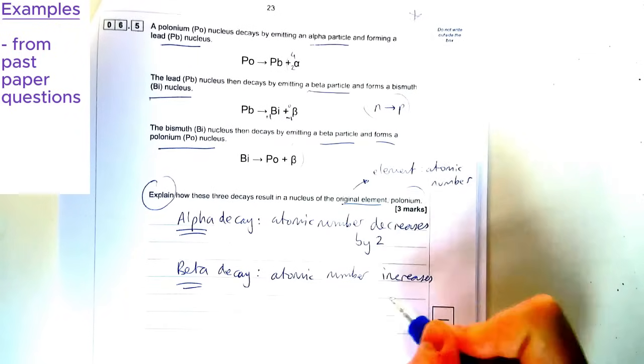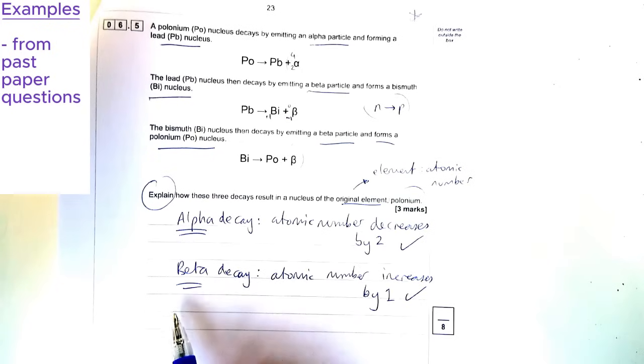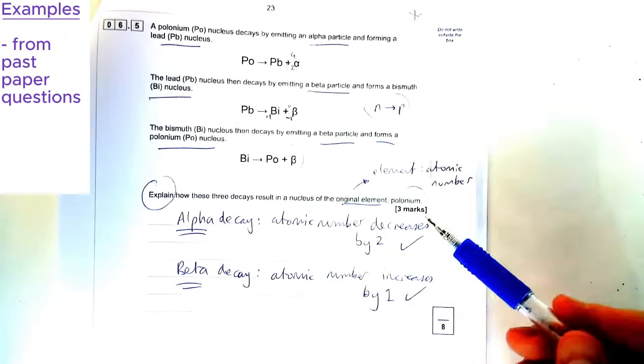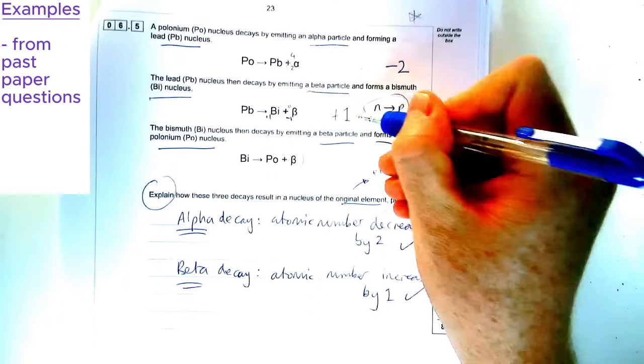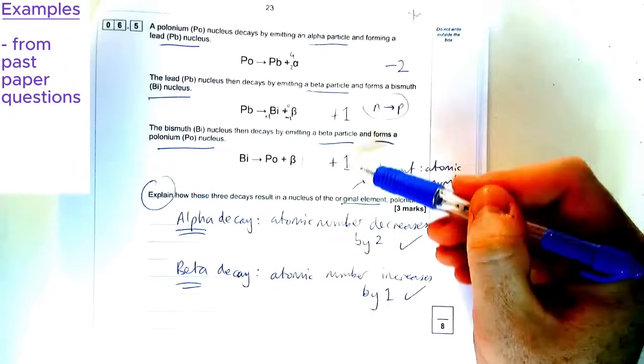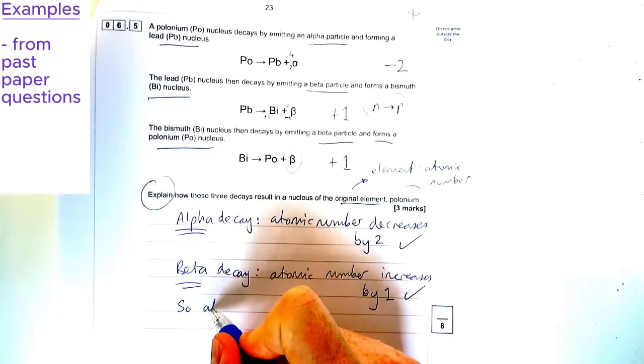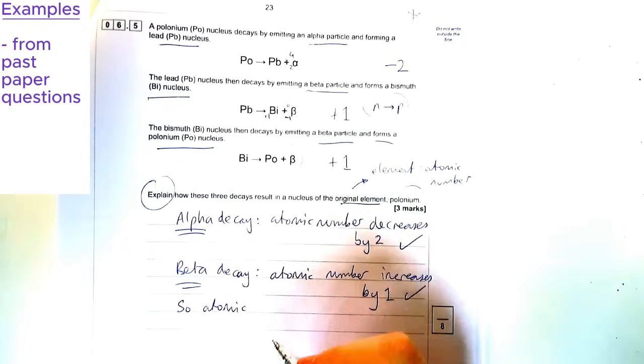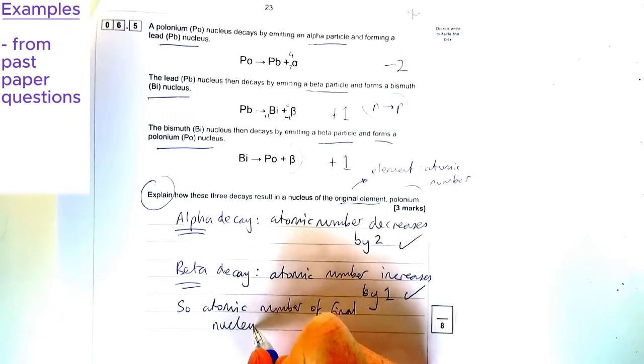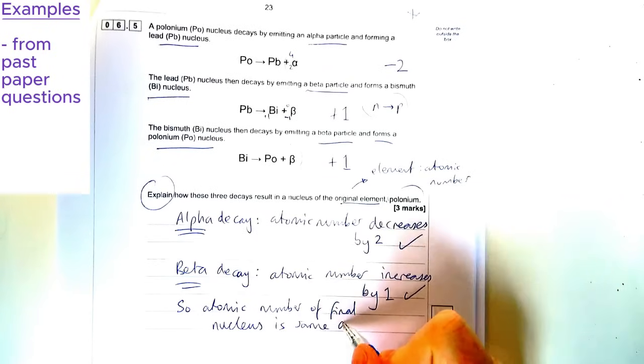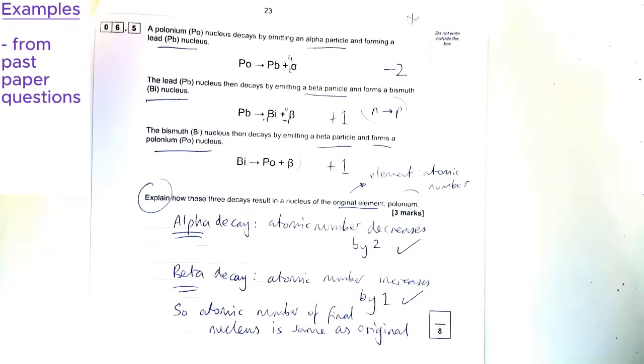Now let's then finalize. By the way, that's two marks already just for stating two facts that we know. If you revise well, you'll know these facts. Last mark is for applying this to the question. Now the original element, polonium, if you've got one alpha decay, so that means the atomic number goes down by two, and then you've got one beta decay, goes up by one, another beta decay, goes up by one, minus two, plus one, plus one, makes it zero. So what that means is for our final mark, we could say that the atomic number of the final nucleus is basically the same as the original. So that's a good example of like a really difficult question, but if you keep your wits about you, make sure you know about your decays, you should be able to get marks here.